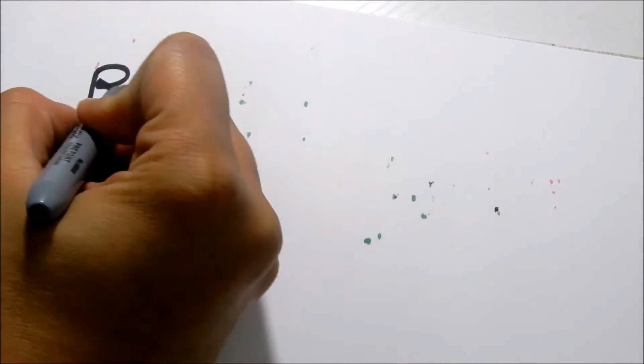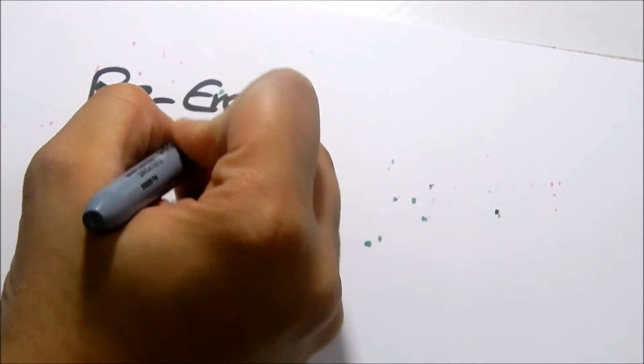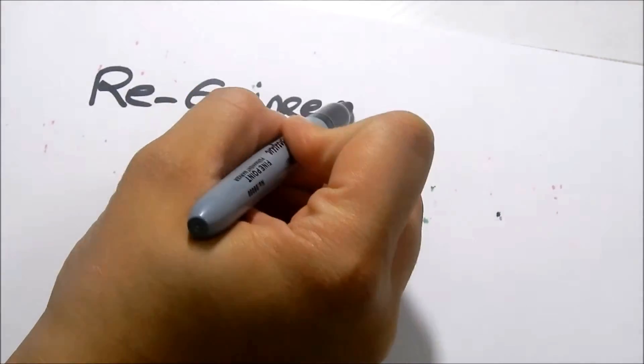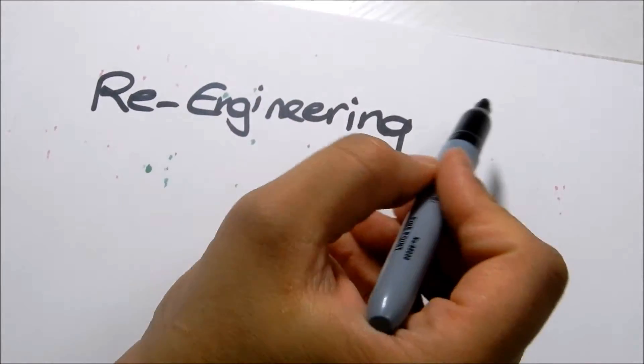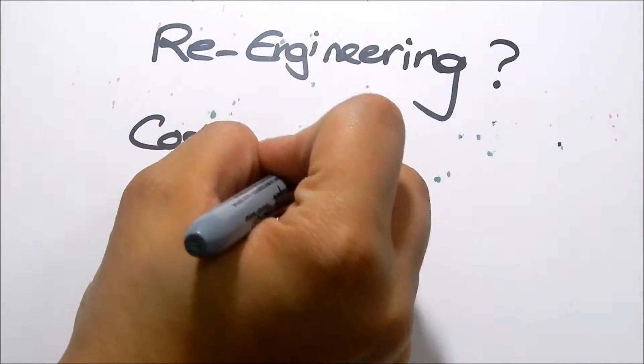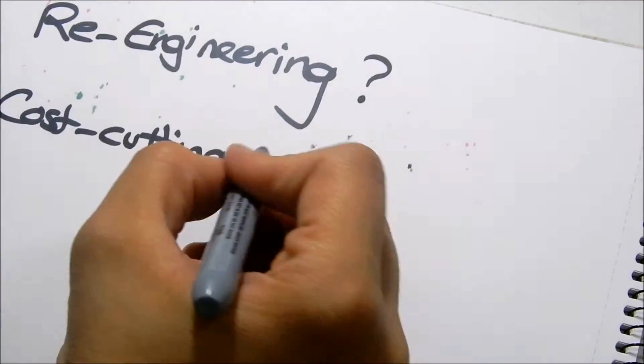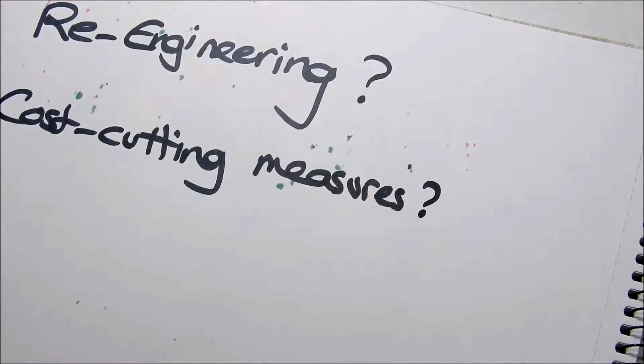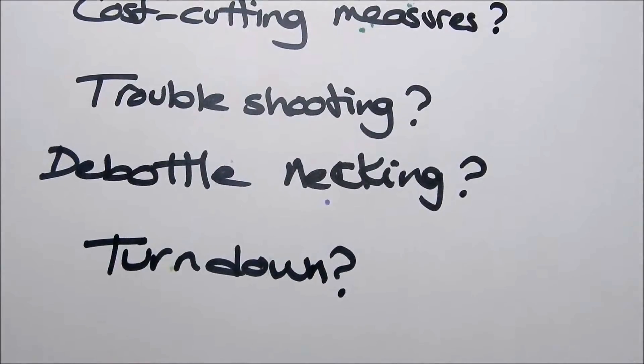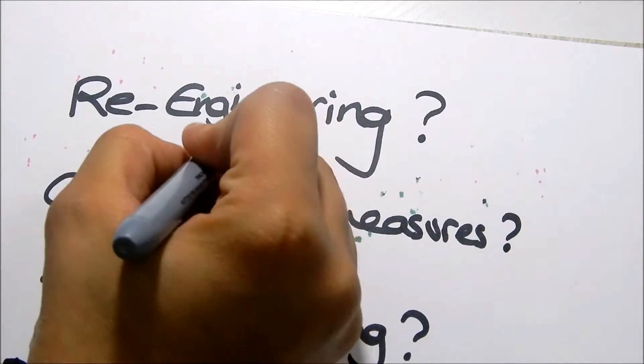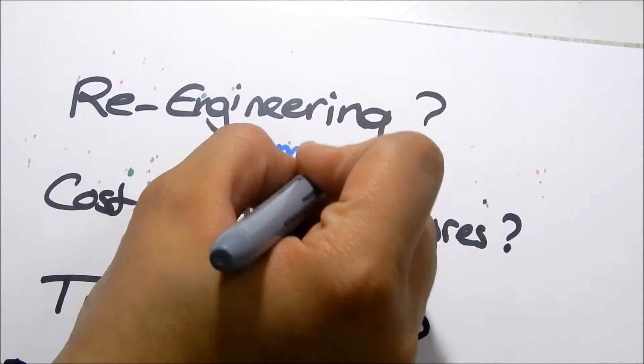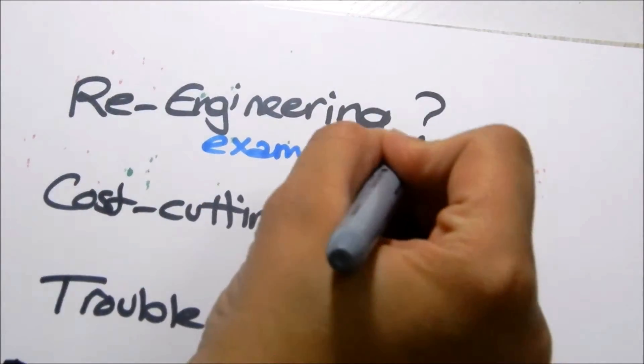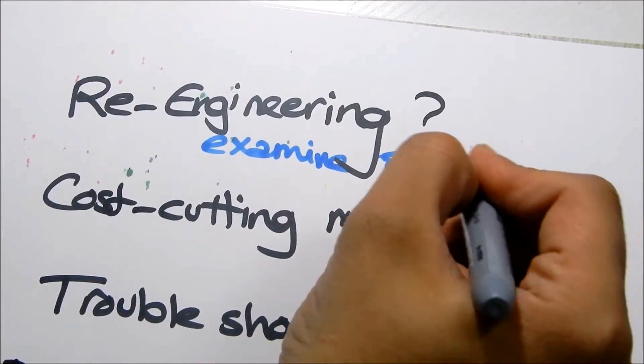So now, let's get familiarized with some engineering or chemical engineering terms. We have re-engineering. What is this? Cost cutting measures, troubleshooting, debottlenecking, and turndown. So, re-engineering is to examine and modifying of a system to a new form.